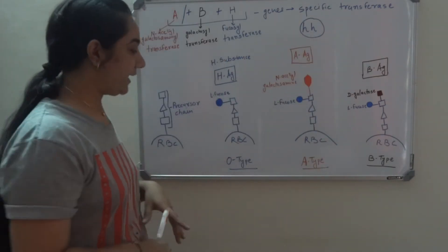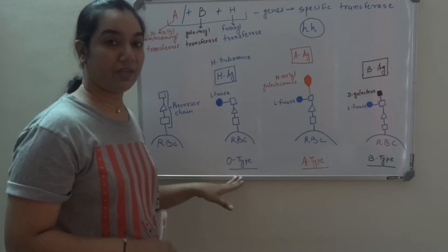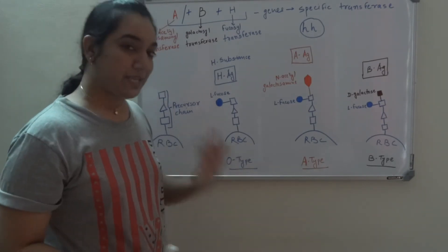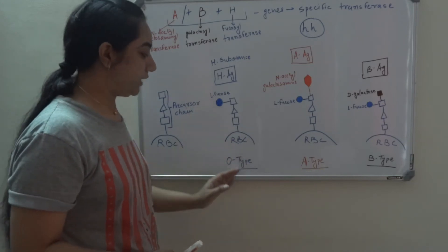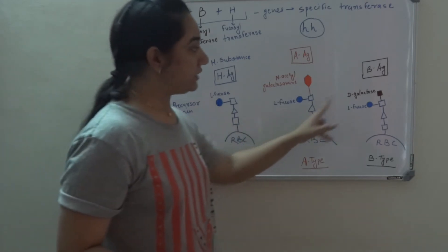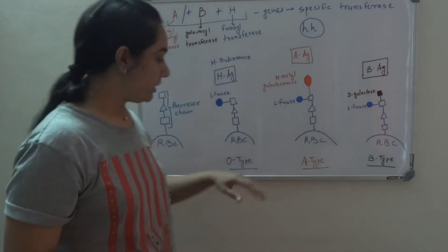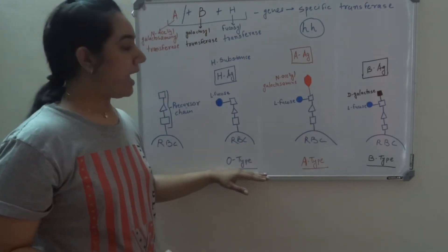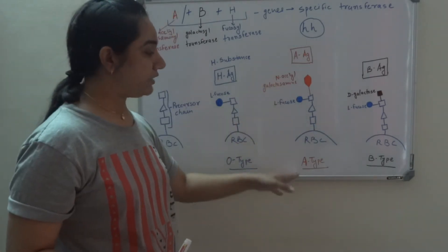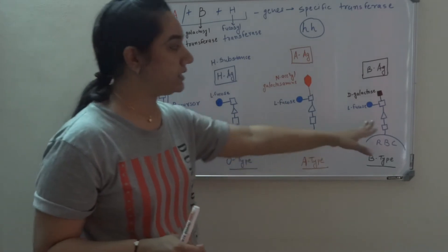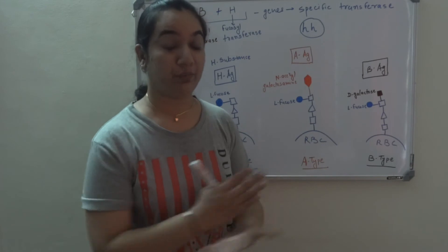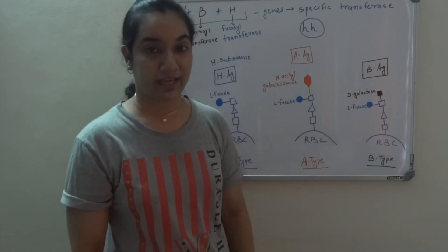Now we also are familiar with this fact that whatever blood group we are, we are going to produce antibody against the other blood group. For example, individual with blood group O has only H substance on RBC. There is no A antigen or B antigen. So such O blood group would have antibody against A and B both. Similarly, blood group A individual would have antibody against blood group B. B would have against A. If the individual is AB, they will not have antibody against any kind of blood.